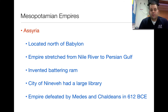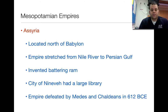Assyria invented the battering ram, which is one unique trait — they used this weapon to besiege other nations. Their largest city, Nineveh, had a large library, which shows that Assyria was dedicated to learning and keeping knowledge. Finally, they were defeated by the Medes and Chaldeans in 612 BCE.